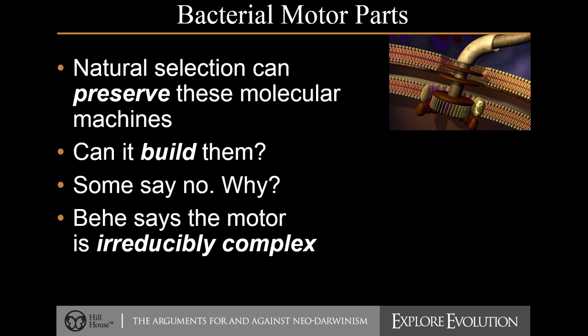So the question becomes: where did it come from? Natural selection could certainly preserve this machine once it was already established, because having it provides a functional advantage for a bacterium that can swim. However, how did it get constructed? Natural selection produces small changes incrementally — when you add all the small ones together, how do you get something like this? In order for this motor to work, all 50 parts need to be there for it to be assembled and functional. So how do you have a half-built motor? If it's all-or-nothing, where does this flagella motor come from?